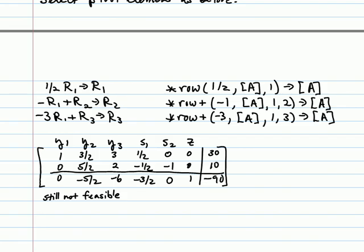Okay, so to pivot in that first row, first element, we would need to take a half row 1 and store that in row 1. And then take a negative 1 row 1, add it to row 2, stored in row 2, negative 3 row 1, plus row 3, stored in row 3. Here are the corresponding functions that we can use on our TI-84 plus calculator. And if we do that, we'll get this resulting tableau.